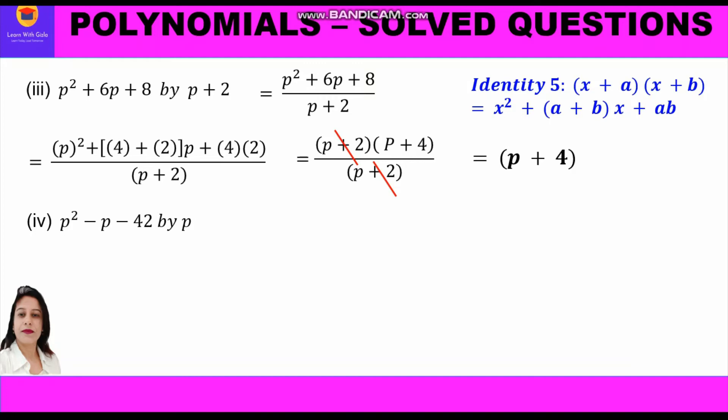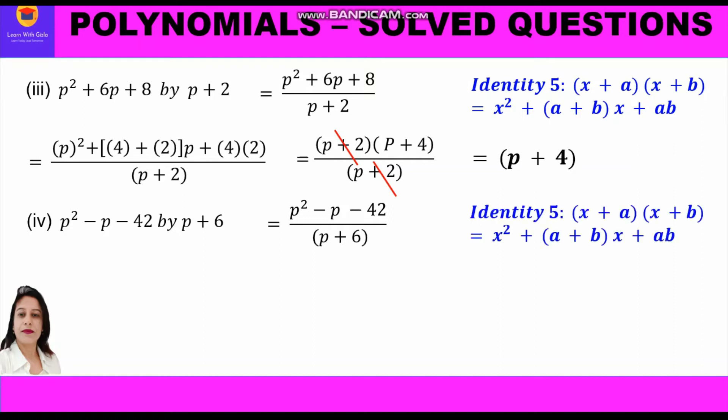Question number 4: divide p squared minus p minus 42 by p plus 6. We write in fraction form: (p² − p − 42) upon (p + 6). We factorize the numerator using identity 5. We need two numbers whose sum is minus 1 and product is minus 42. We know that minus 7 plus 6 gives minus 1, and minus 7 times 6 gives minus 42.